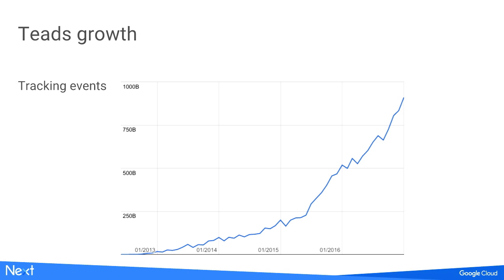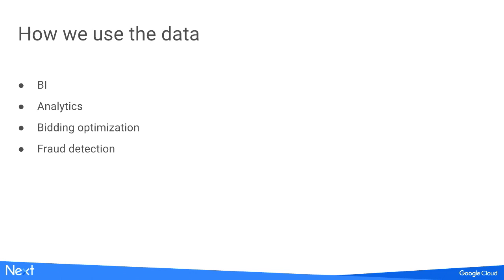Today we are the number one video marketplace in the world. We can see on this graph the growth from 2012 until now — we now reach more than 1.2 billion users every month, putting us in the club of websites reaching more than 1 billion users. What do we do with this kind of data? We do BI for internal purposes, analytics dashboards for publishers and advertisers, machine learning to optimize our algorithms, and fraud detection.